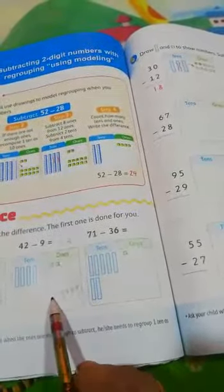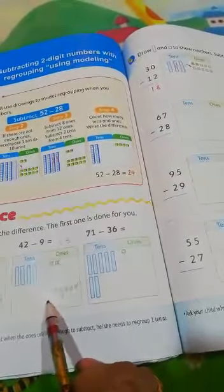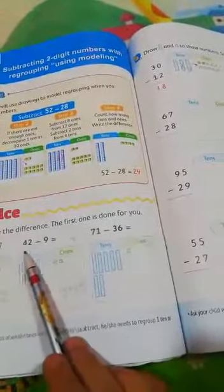This stick was decomposed. Okay, 42 minus 9 equals 33.